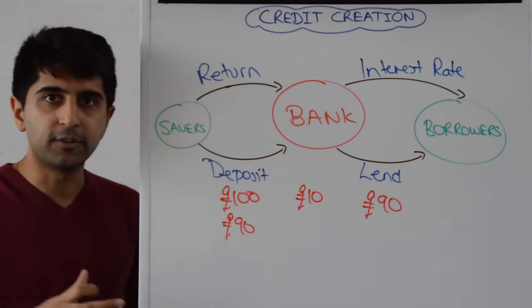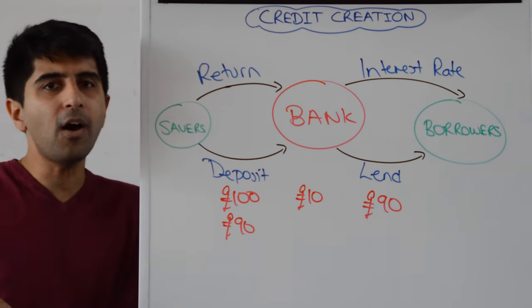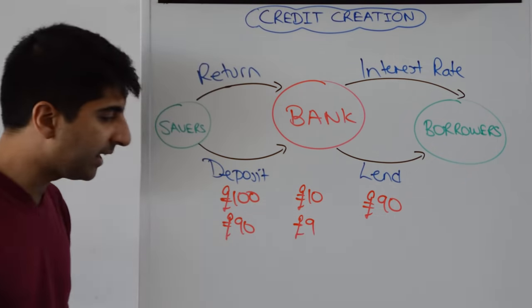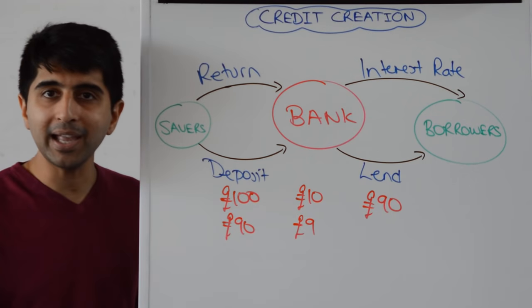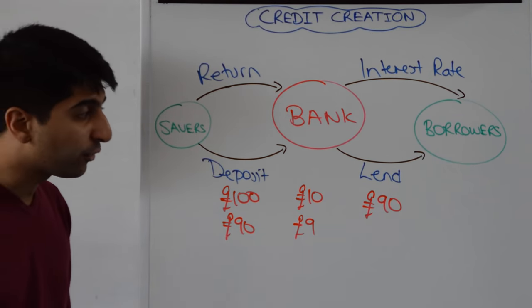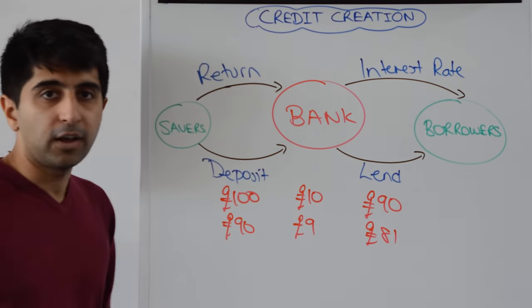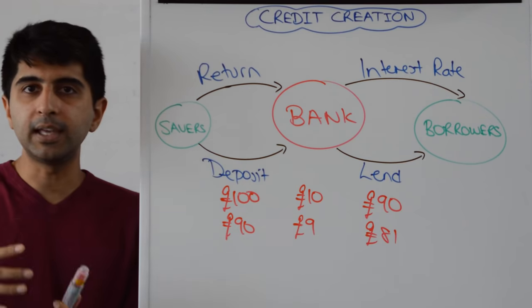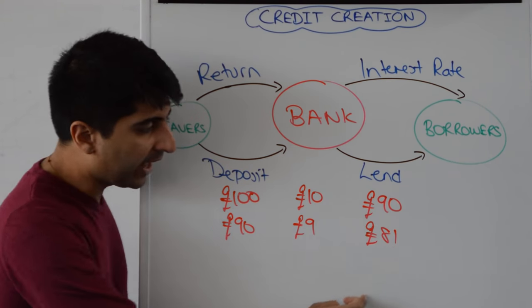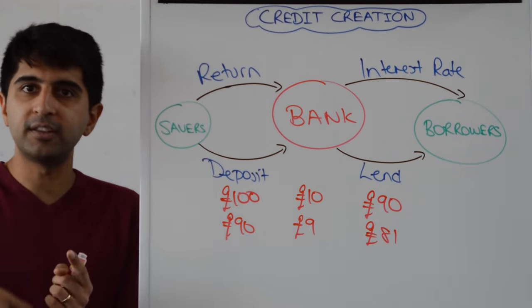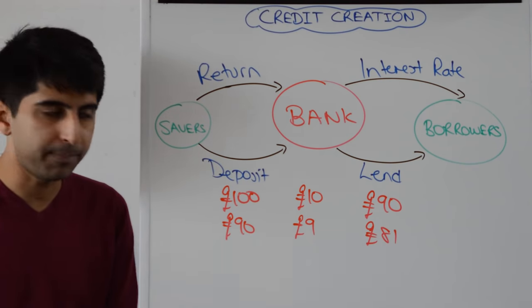So now ninety pounds are back into the bank. The bank will think okay only nine pounds of that I need to keep in the bank just in case that individual saver comes back and demands some of their savings. The rest can be lent out to individuals, lent out to borrowers who will then buy goods and services that generates income for somebody else and eventually that eighty one pounds will come back in the form of a deposit in the bank and that process keeps happening.